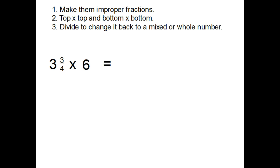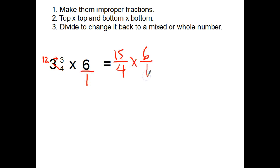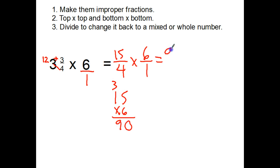Three and three-fourths times six. Remember, first thing is getting improper fractions. Four times three is twelve, twelve plus three is fifteen, so we've got fifteen fourths. Put the one under the six. So fifteen fourths times six over one. Fifteen times six: five times six is thirty, carry my three — ninety on top for my numerator. Four times one is four on the bottom.